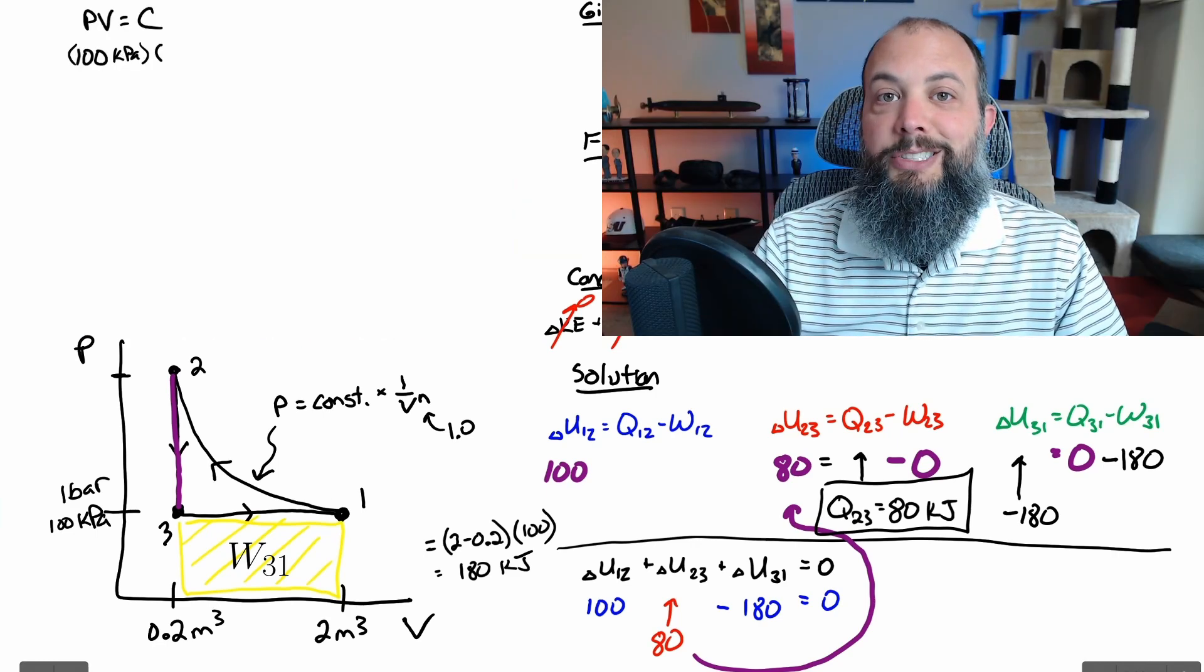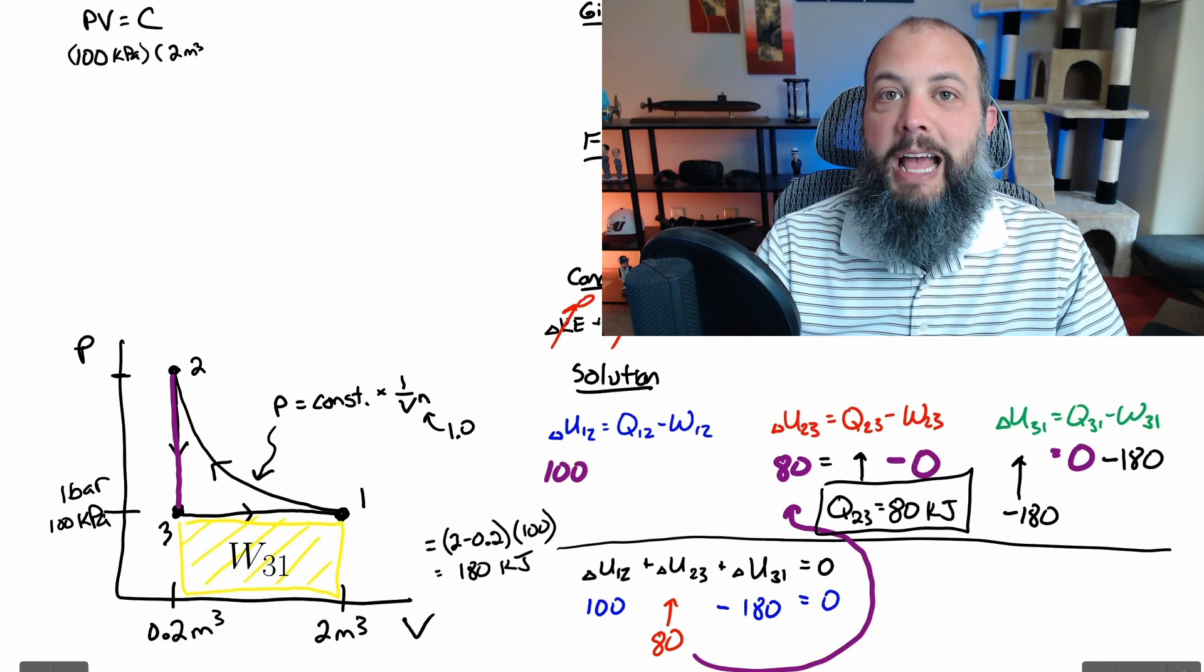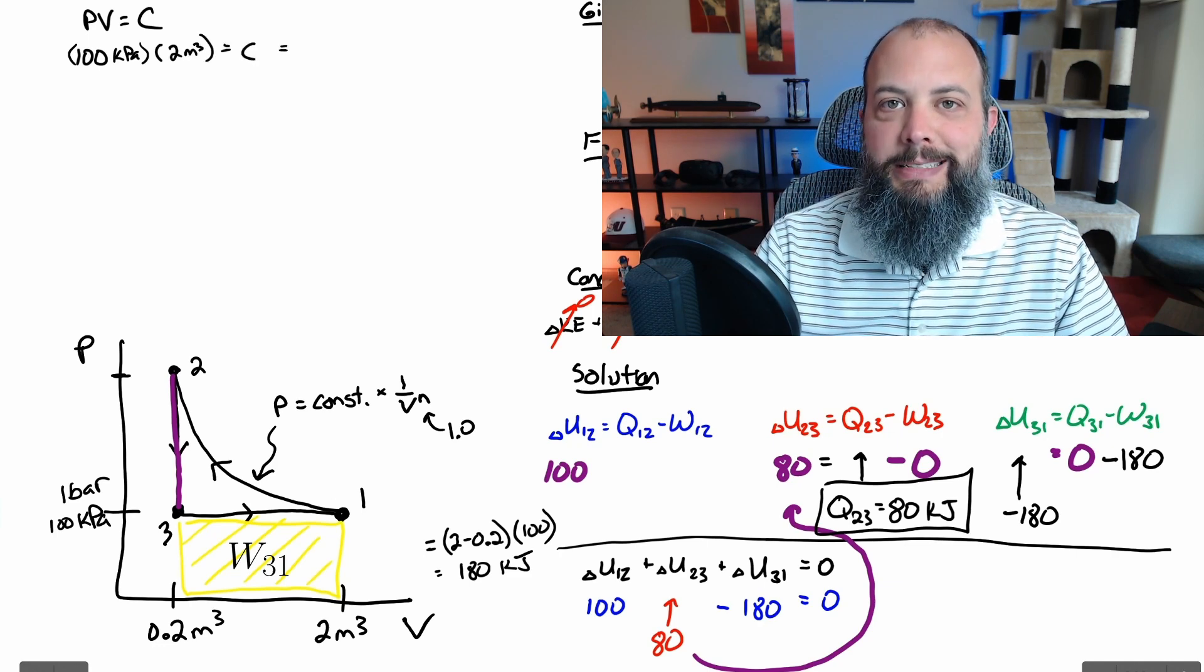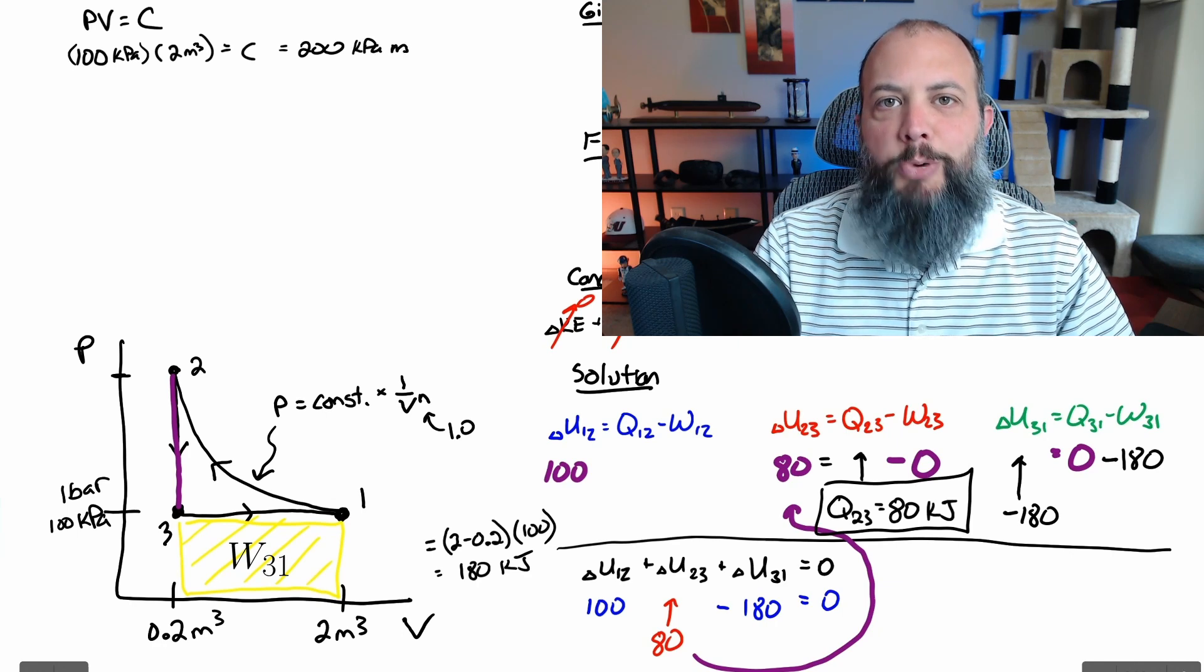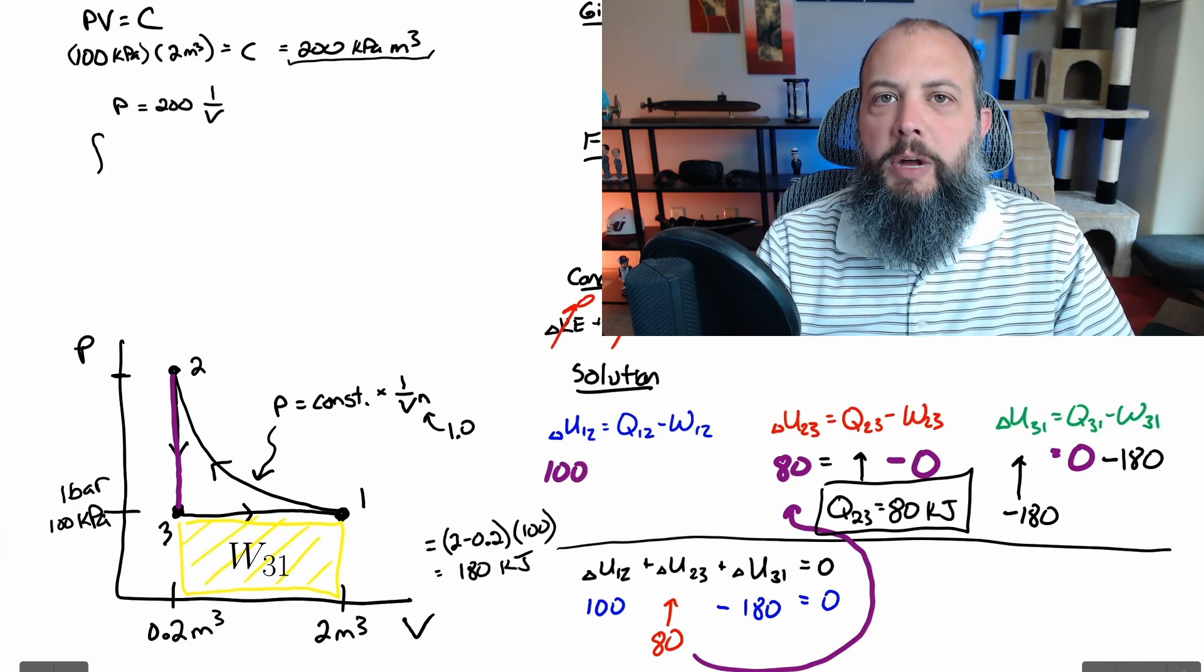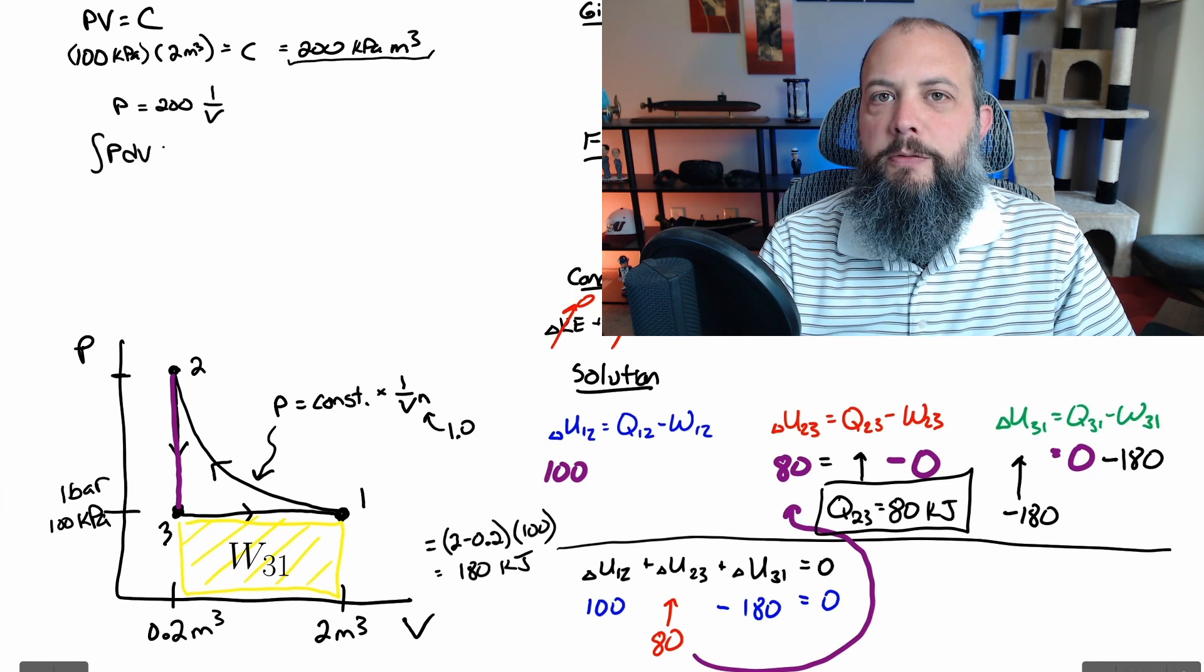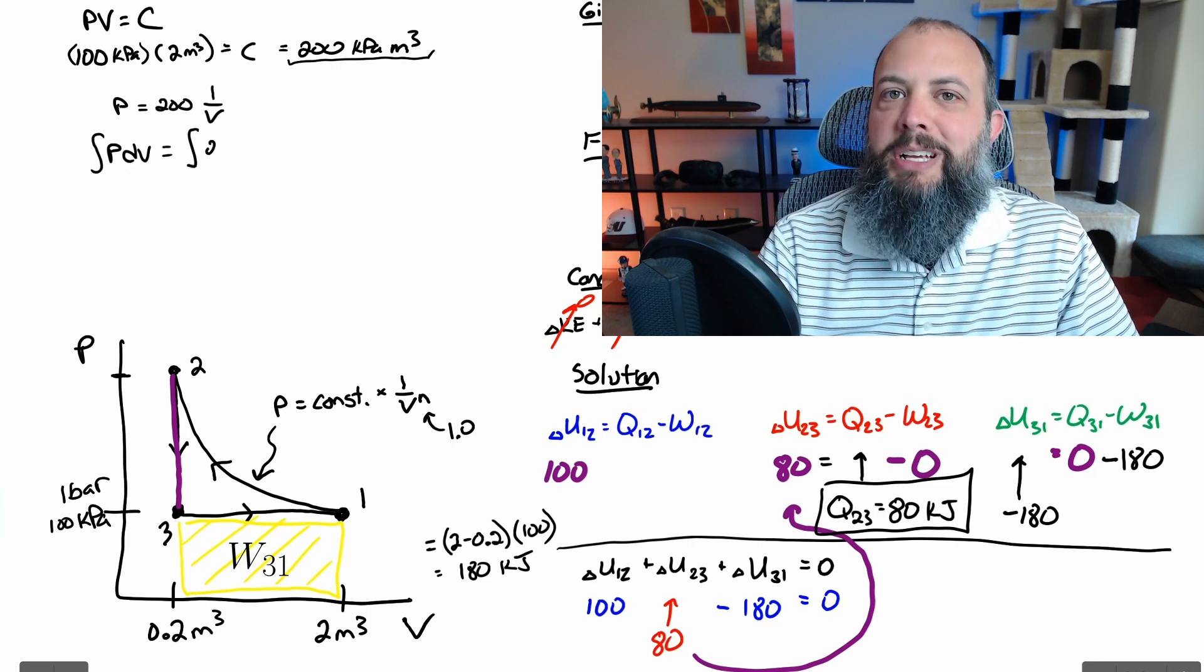To set up the definite integral the first thing is to solve for that constant we're going to actually need to know what number that is. So I'm using the letter C to represent this constant and it gets a value of 200.